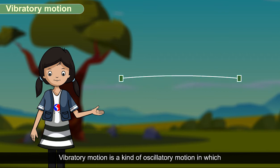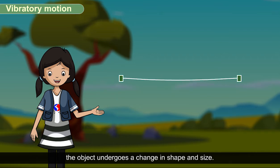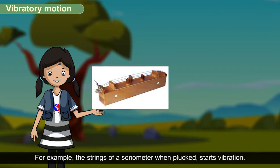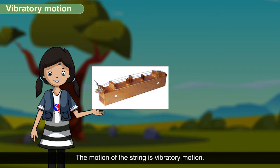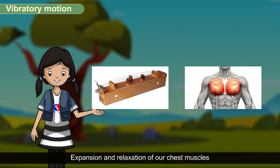Vibratory motion is a kind of oscillatory motion in which the object undergoes a change in shape and size. For example, the strings of a sonometer when plugged starts vibration. The motion of the string is vibratory motion. Expansion and relaxation of our chest muscles when we breathe in and out is also a vibratory motion.